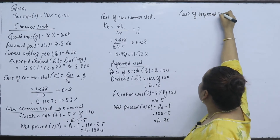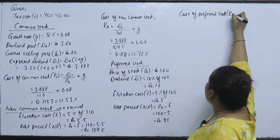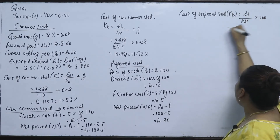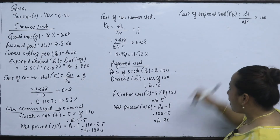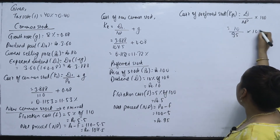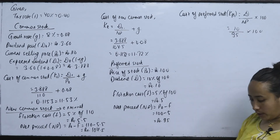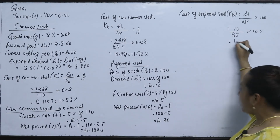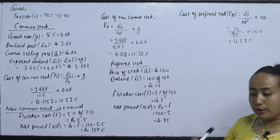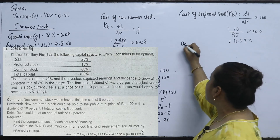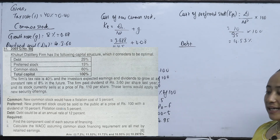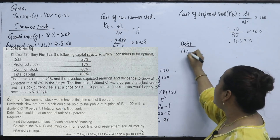Net proceeds NP = P0 − F = 100 − 5% of 100 = Rs. 95. The cost of preferred stock KPS = 10 / 95 = 10.53%.